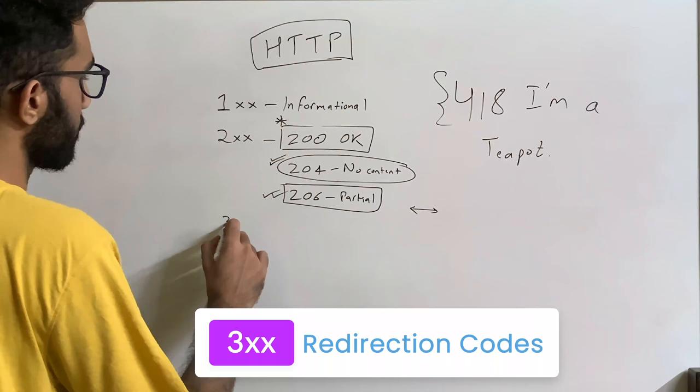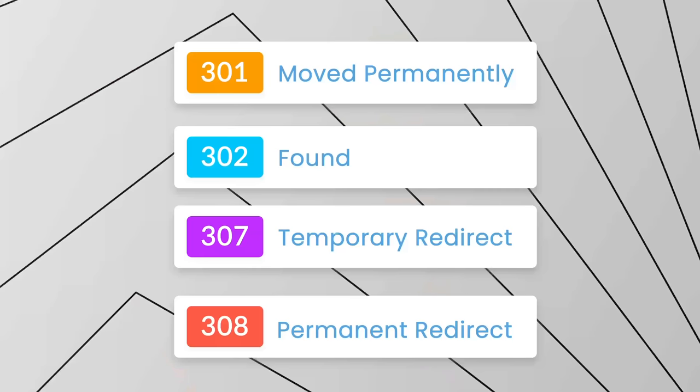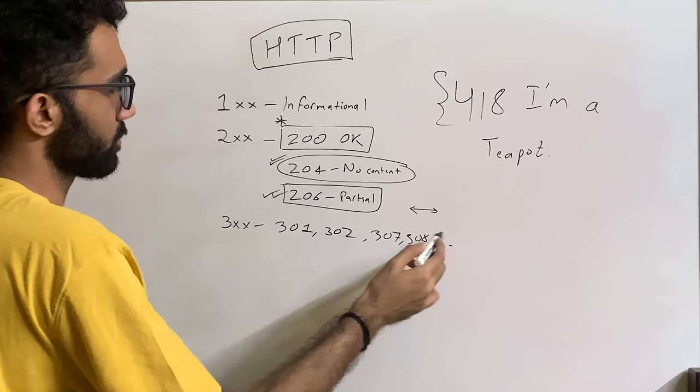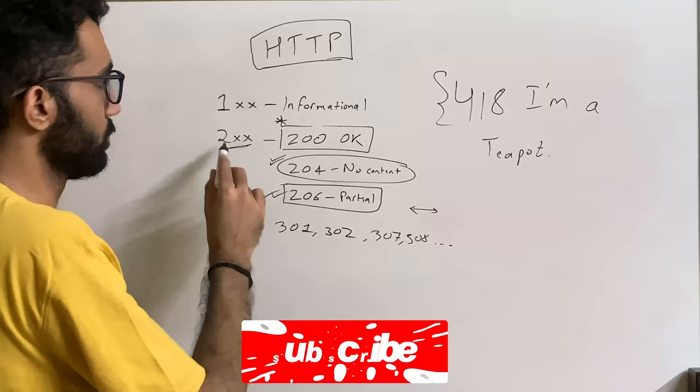In the 300 range, we have redirection messages, which tell the client: go to a different URL than the one you're trying. 301, 302 are temporary and permanent redirect status codes. 307 and 308 as well. There are a bunch of status codes missing in these ranges — you'd probably have five or ten status codes in the 200 range and similarly for the 300 range.